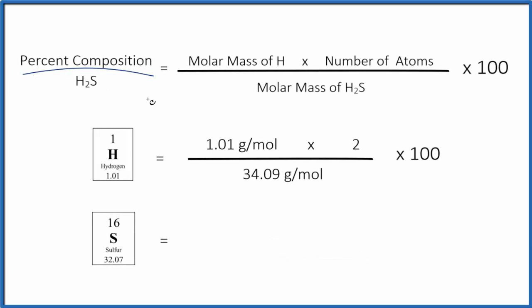Let's find the percent composition by mass for each element in H2S. This is hydrogen sulfide. So we'll start by looking at hydrogen.